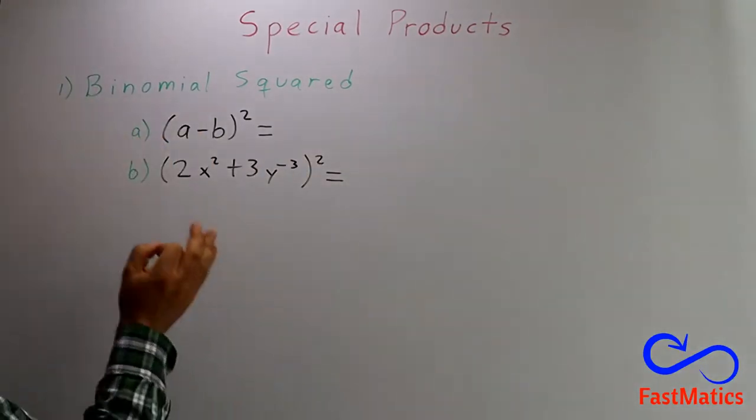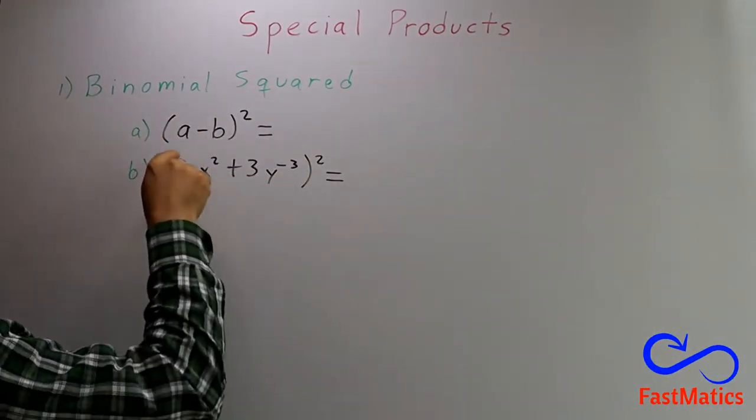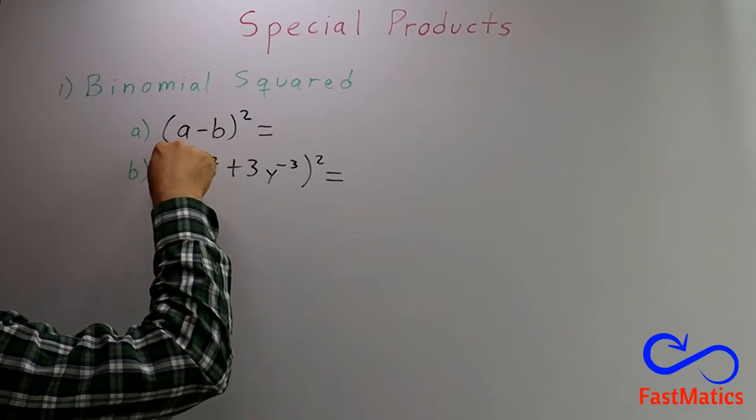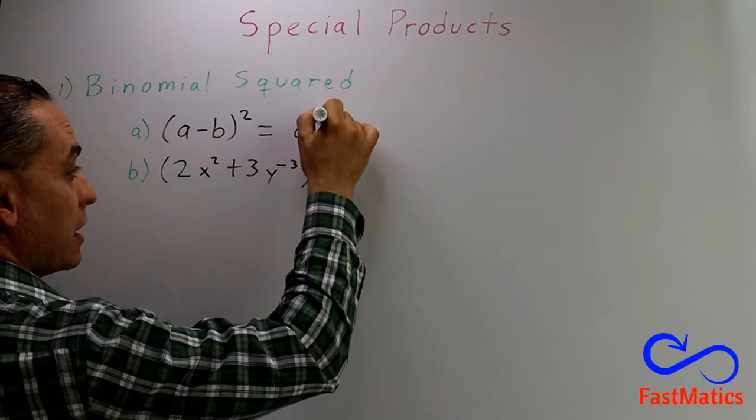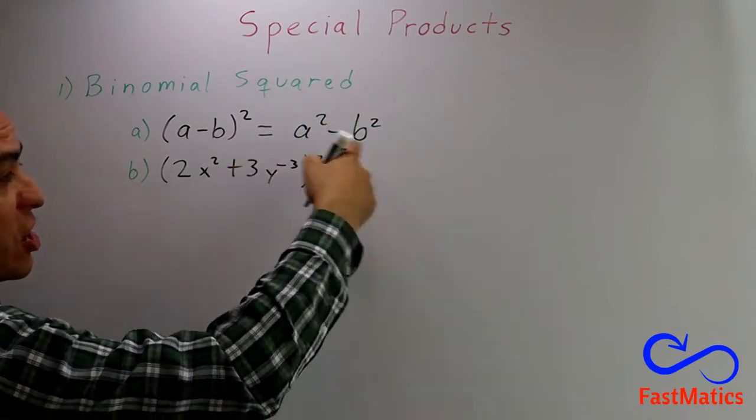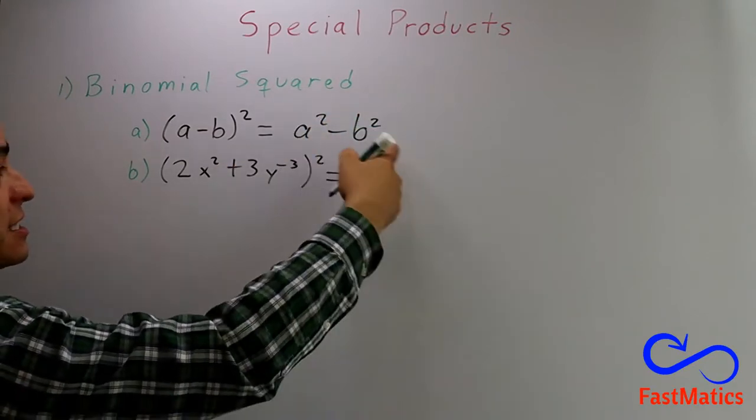And please, never, never, never, you are going to make a squared minus b squared. That is not the answer. That is forbidden.